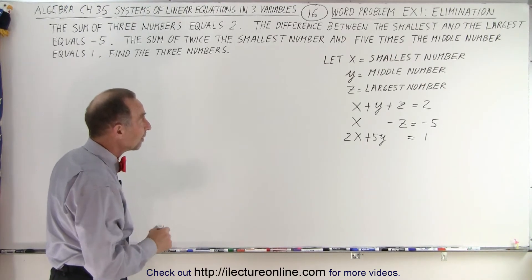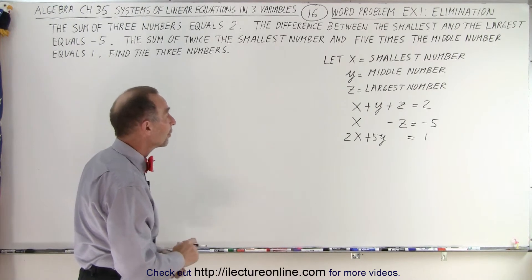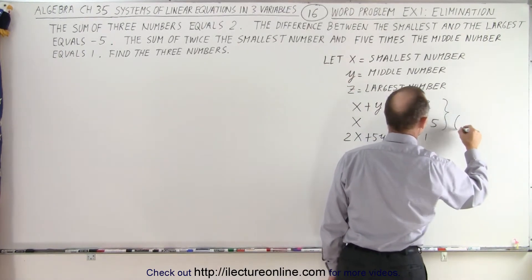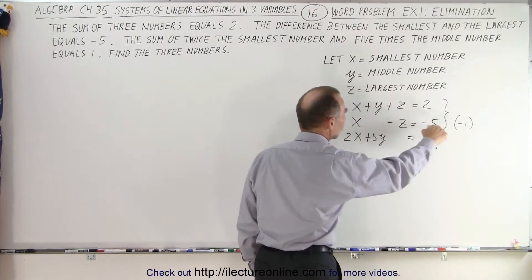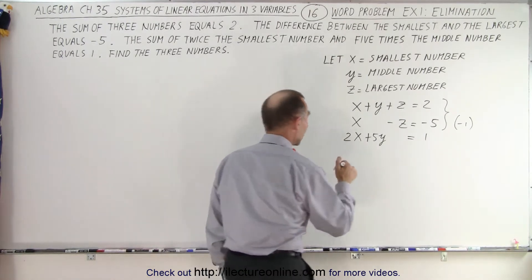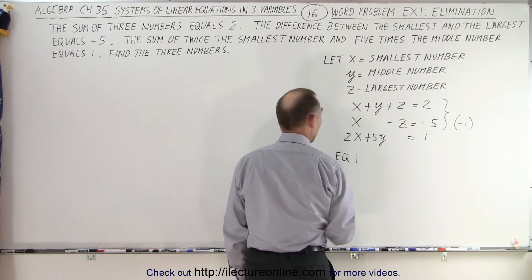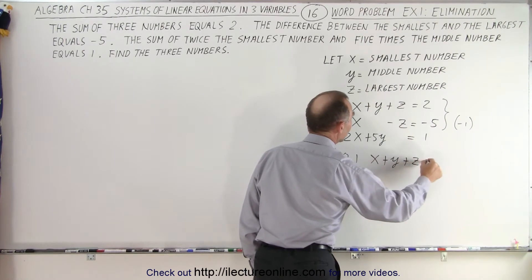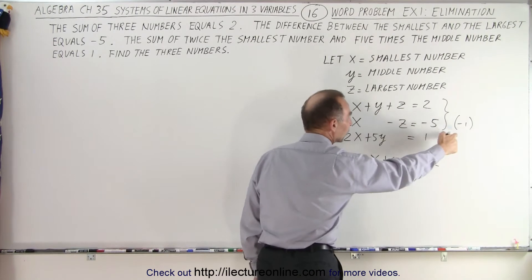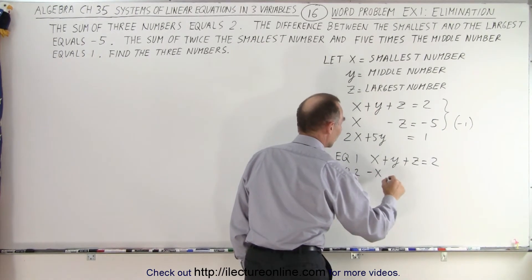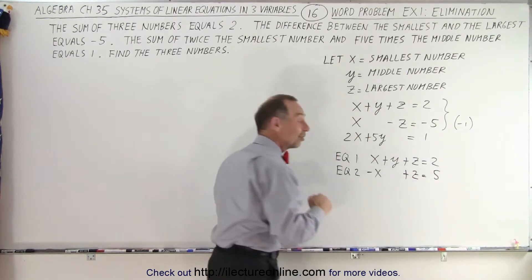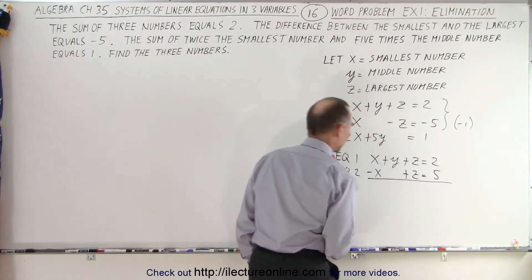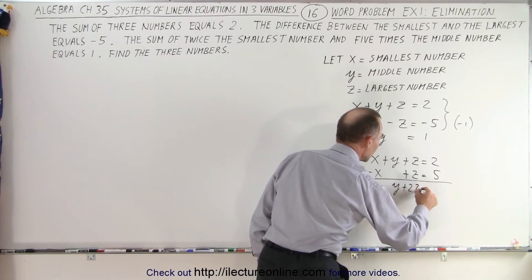Now we can solve them simultaneously using the method of elimination. We're going to eliminate the x's using the first two equations. I'll take equation 1 as is: x plus y plus z equals 2. For equation 2, I multiply both sides by negative 1, changing all the signs, so I get negative x plus z equals positive 5. When I add the two equations together, the x's drop out, giving me y plus 2z equals 7. That's the first equation with only two unknowns.